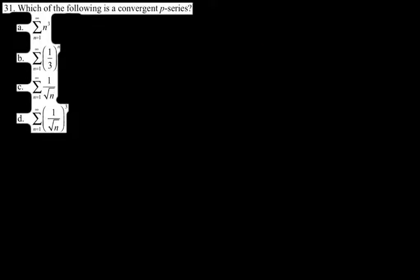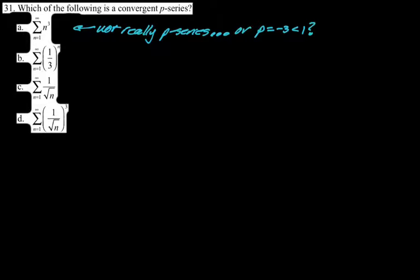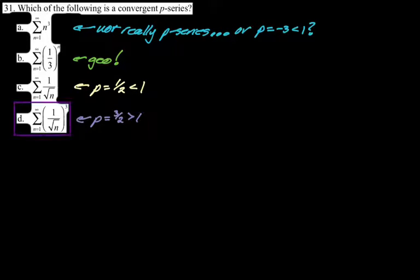Which of the following is a convergent P-series? Choice B is not even a P-series, but it is convergent — it's geometric, there to confuse you. Choice A would be 1 over N to the negative 3rd (P = −3 < 1), so it diverges. Choice C has P = 1/2 < 1, so it diverges. Choice D is really 1 over N to the 3/2, where P = 3/2 > 1 — that's our answer.